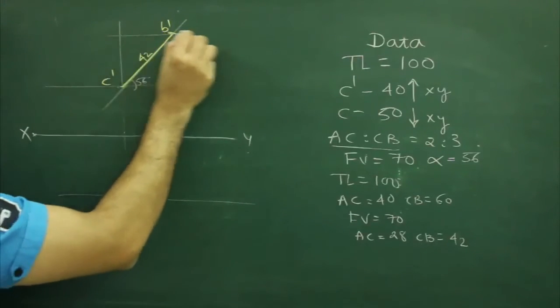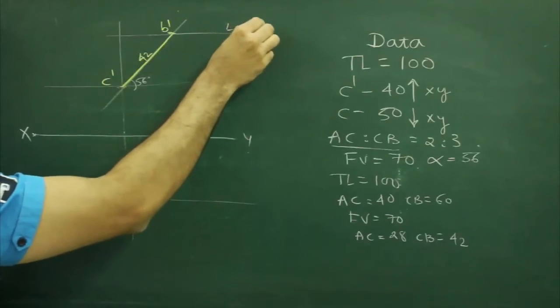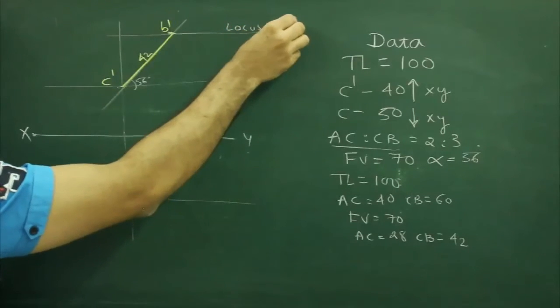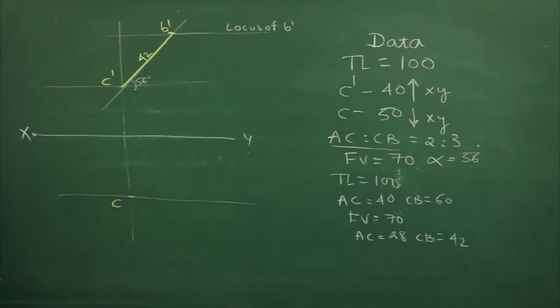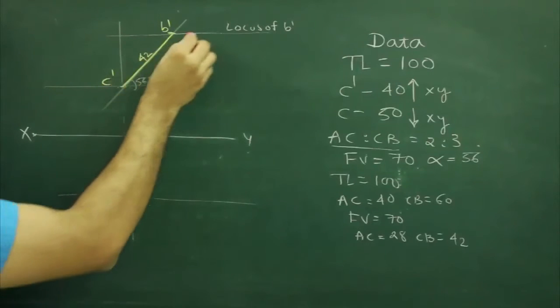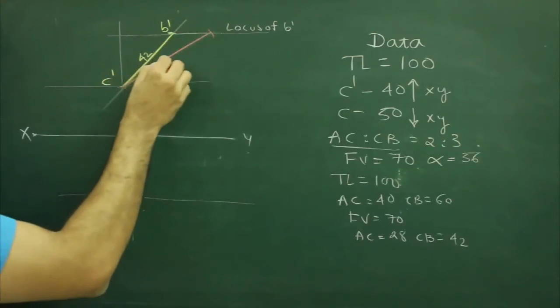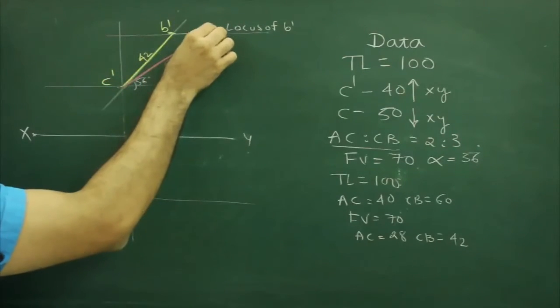We will draw locus on B dash, then we have true length also, so from C to B true length is 60, so we will cut 60 and this is B1 dash.